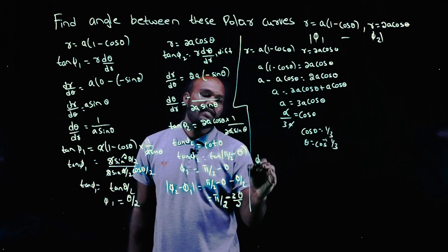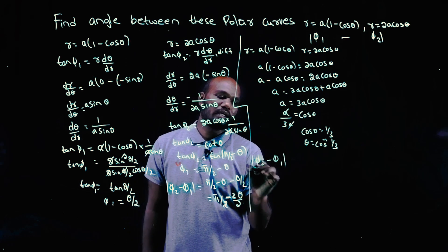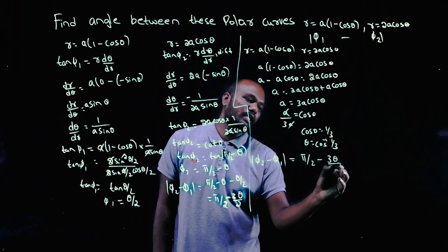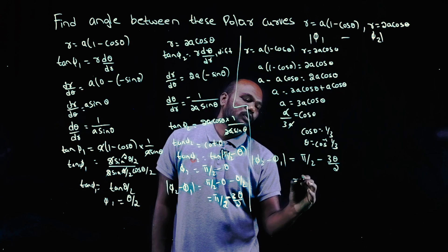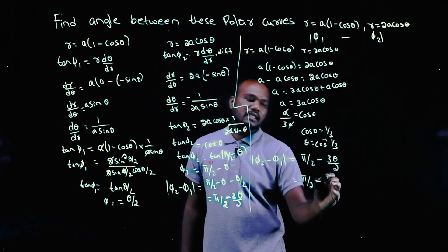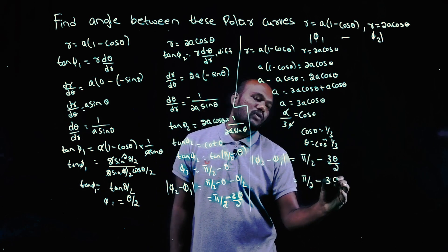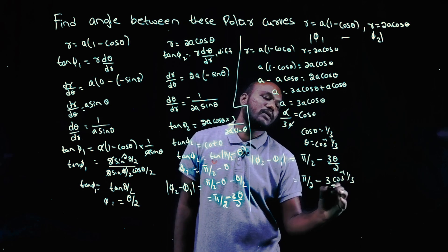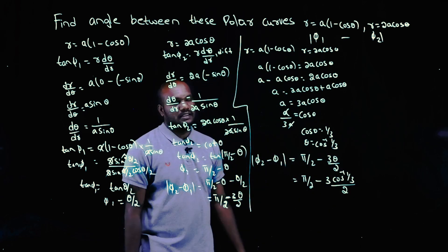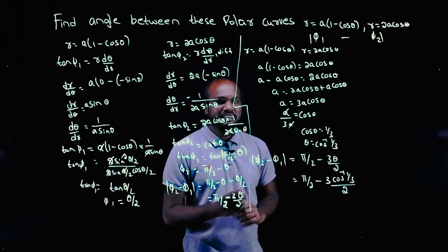So we have φ₂ - φ₁ = π/2 - 3θ/2. Substituting the value of θ: the final answer is π/2 - (3/2)cos⁻¹(1/3). This is the final solution.